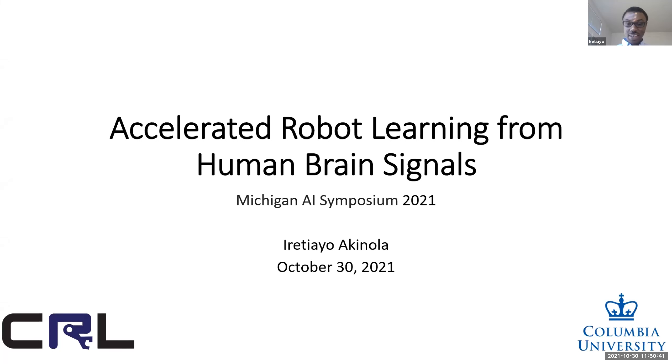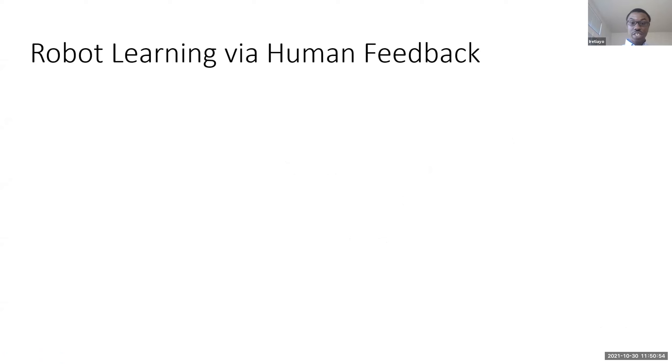Thanks for having me. I'm Ireti, and today I'll be presenting a line of research that I did during my PhD at Columbia University. Robotic researchers are generally interested in getting robots to perform tasks autonomously. But it is still important to have humans in the loop to specify the task to be performed, provide some form of demonstration, or evaluative feedback to the robot as it performs the task.